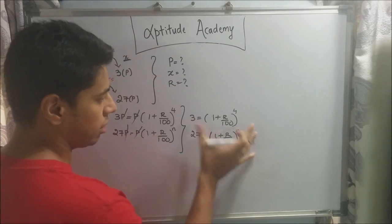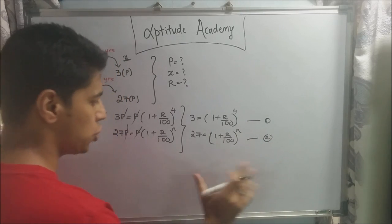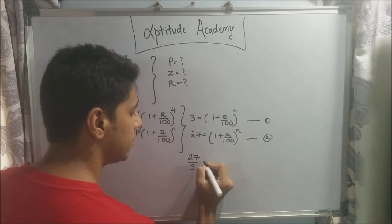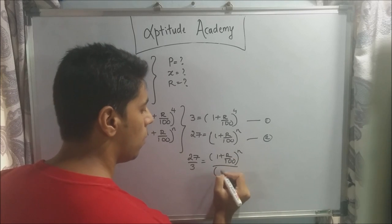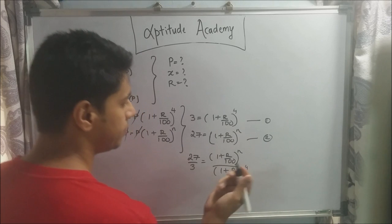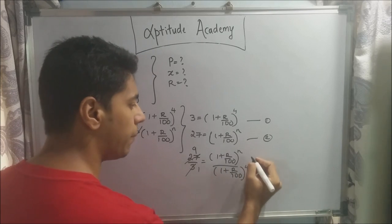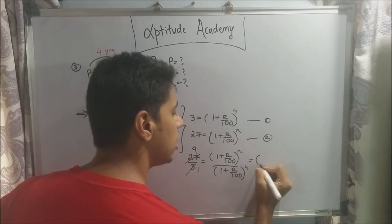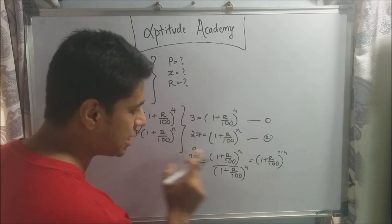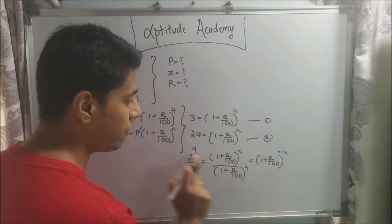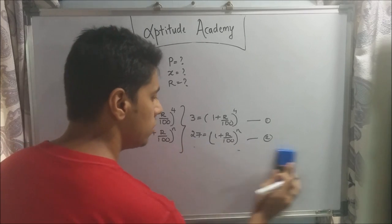If we divide equation 2 by equation 1, we get 27/3 = (1 + R/100)^N / (1 + R/100)^4 = (1 + R/100)^(N−4). So 9 = (1 + R/100)^(N−4). But this gives one equation with two unknowns, R and N, so we cannot solve it this way.